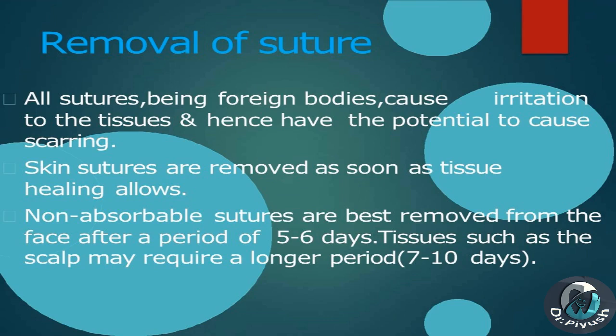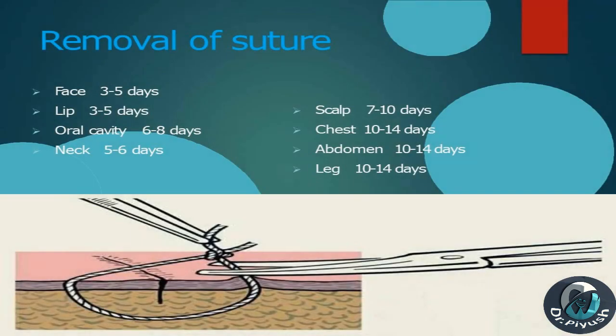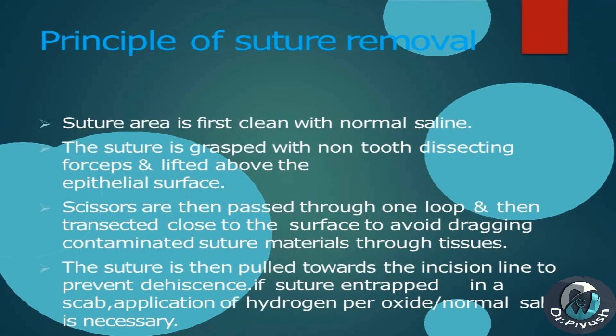Removal of suture: all sutures, being foreign bodies, cause irritation to tissues and have the potential to cause scarring. Skin sutures are removed as soon as tissue healing allows. Non-absorbable sutures are best removed from the face after 5–6 days. Removal times by location: face 3–5 days, lip 3–5 days, scalp 7–10 days, oral cavity 6–8 days, chest 10–14 days, neck 5–6 days, abdomen 10–14 days.